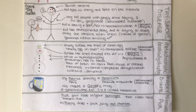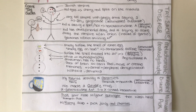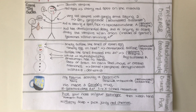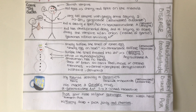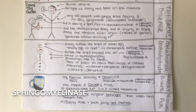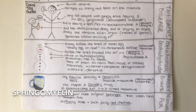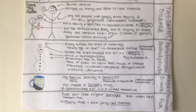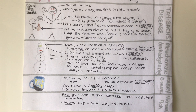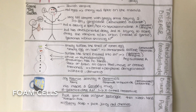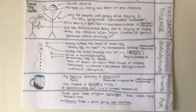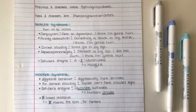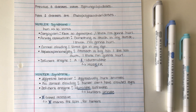Next we have Niemann-Pick disease, remembered with the phrase: 'if you pick your nose with your finger, you have to wash your hand with foamy soap before you pick the juicy red cherries.' Pick reminds us of Niemann-Pick. The word finger helps us remember the deficient enzyme sphingomyelinase and the accumulated substrate sphingomyelin. Foamy reminds us of foam cells, which are lipid-laden macrophages seen on histology. Red cherries remind us of the cherry red spot on the macula.